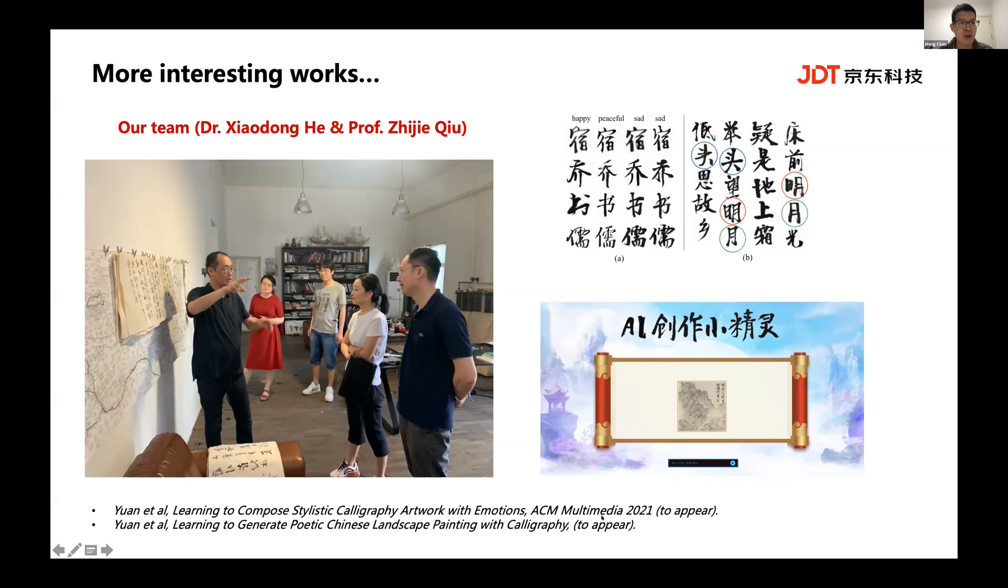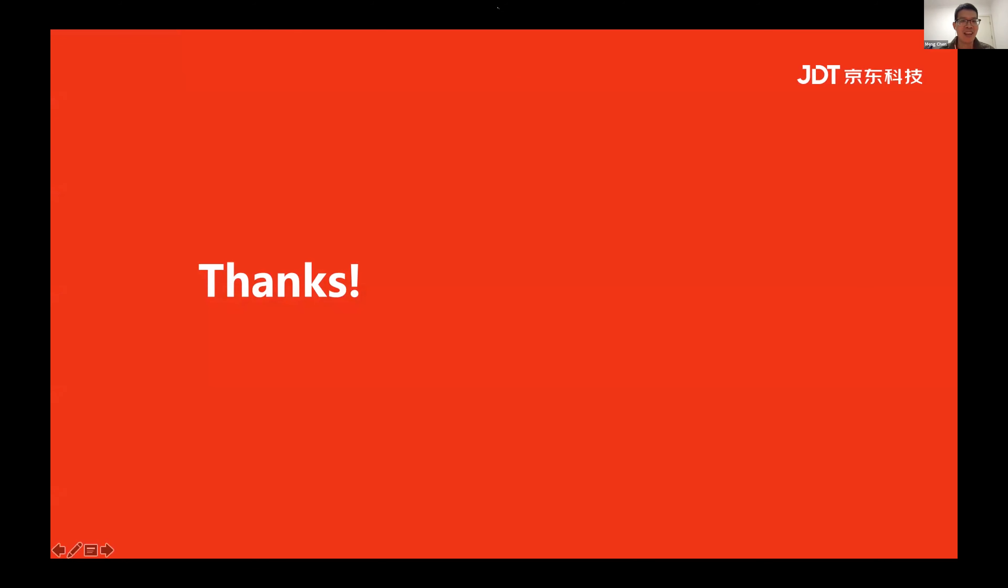One is about color calligraphy generation, which will appear next week at the Multimedia conference in Chengdu, China. Another work is about generating poetic Chinese landscape paintings with CalliGraph. We have a very nice demo. This is a picture of our team members. Maybe some of you know Dr. Xiaodong He, who is a very famous scientist, especially in both the computer vision and natural language processing fields. We also collaborate with Professor Qiu Zhijie, who is a very famous artist in China. So that's why we do so much work related to art. Okay, that's my presentation. Thanks a lot.